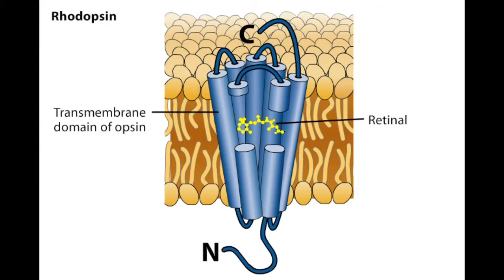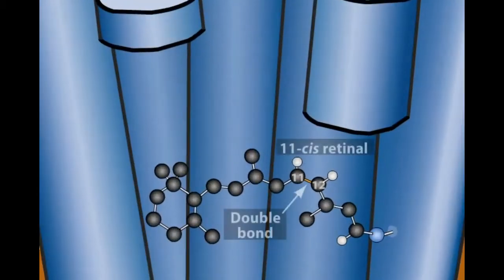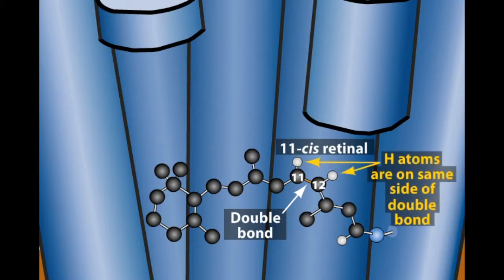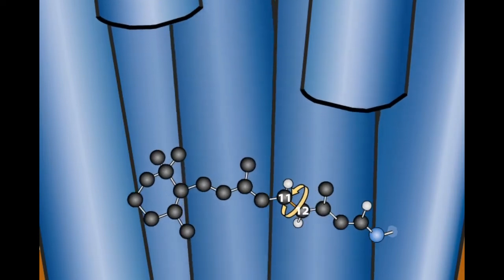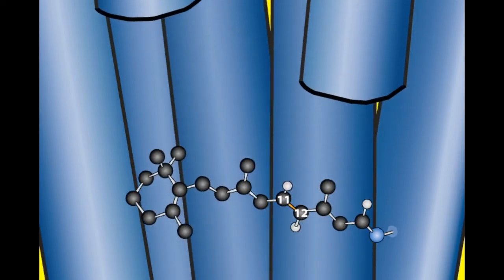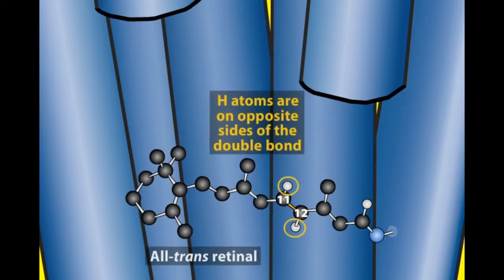Here, retinal is in a conformation called 11-cis, with cis referring to two hydrogen atoms being on the same side of an important double bond. When retinal absorbs a photon of light, a component of this double bond breaks, allowing free rotation about the bond. This change in retinal to an all-trans form triggers a series of alterations in the opsin component of the molecule.